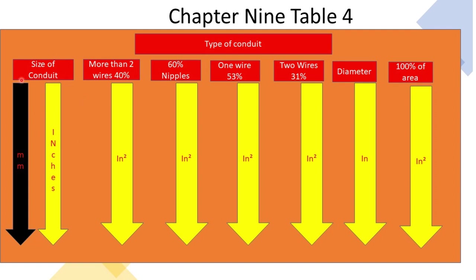The 60% column is for nipples — when we're dealing with conduit that is 24 inches or less, we use the 60% fill column. So if a question asks how many conductors can fit in a nipple of a given size, you come to your conduit size on the left, cross over to the 60% column, and grab that value — that's how much total space you have to fill.